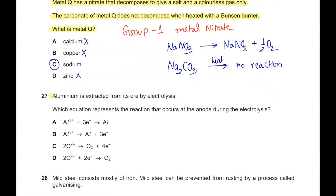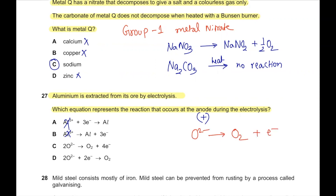Question number 27. Aluminium is extracted from its ore by electrolysis. Which equation represents the reaction at the anode? The anode is the positive electrode and attracts anions. Options A and B are wrong because they involve cations. The anode attracts oxide anions (O²⁻). Oxide ions are oxidized: 2O²⁻ → O₂ + 4e⁻. Therefore C is the correct answer.